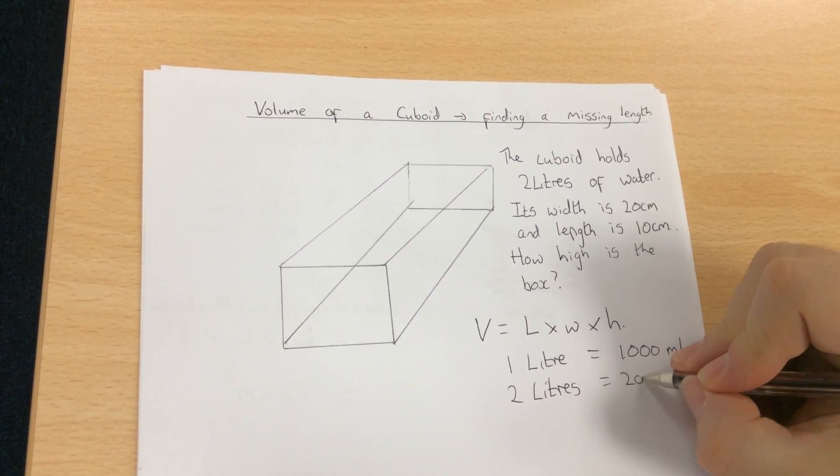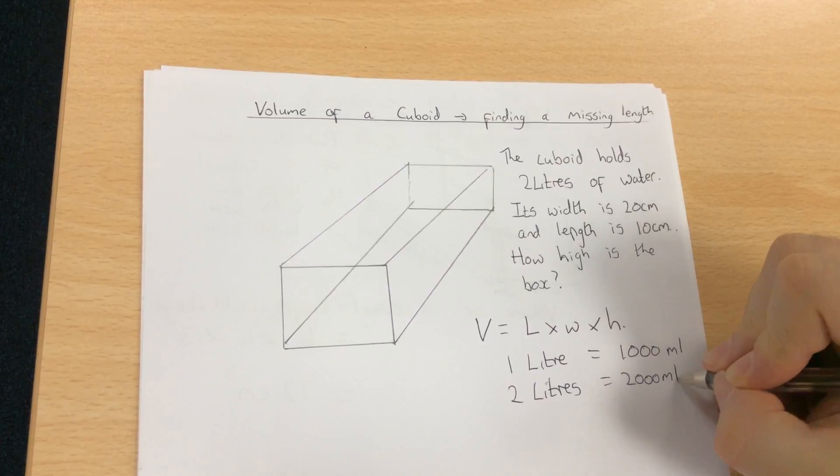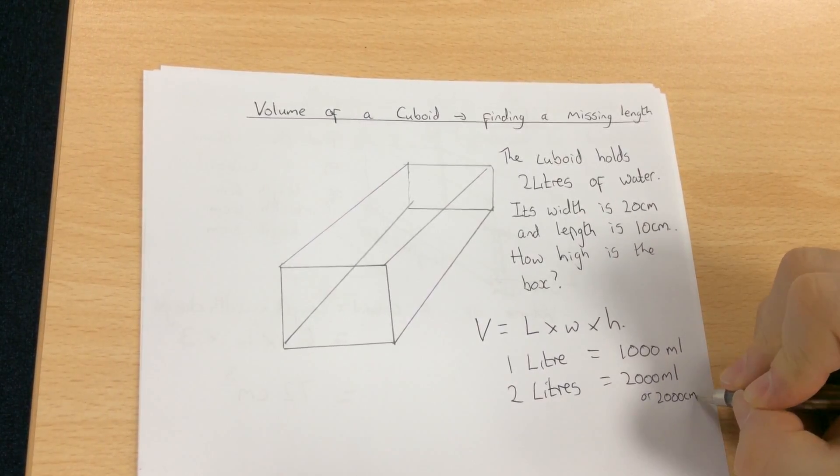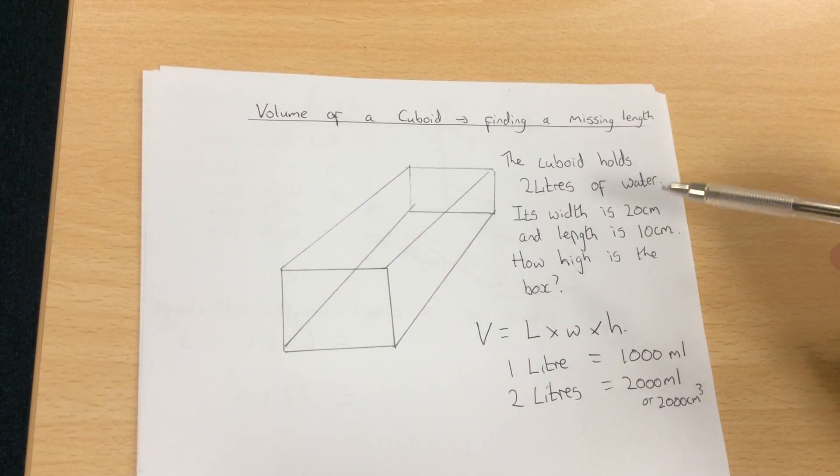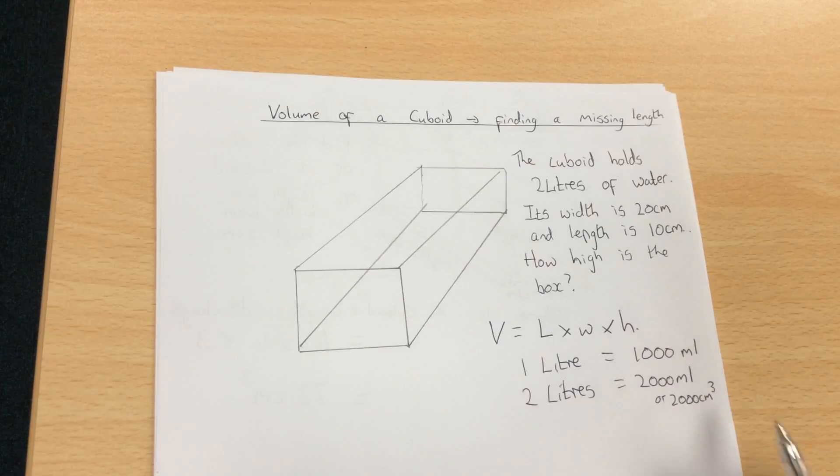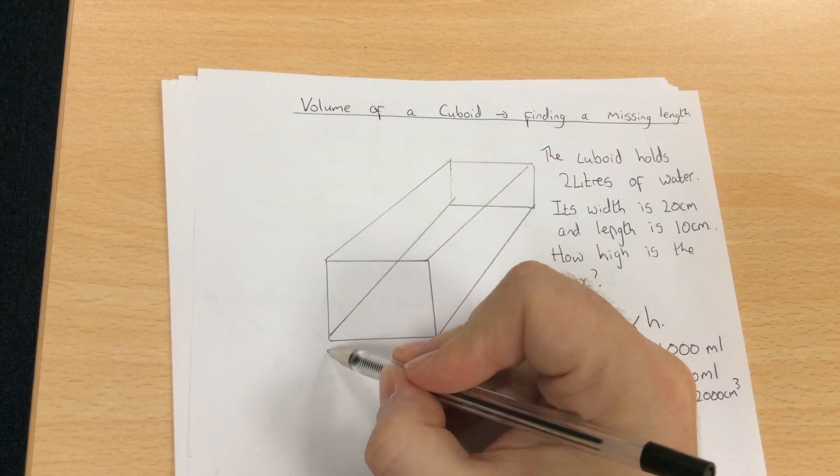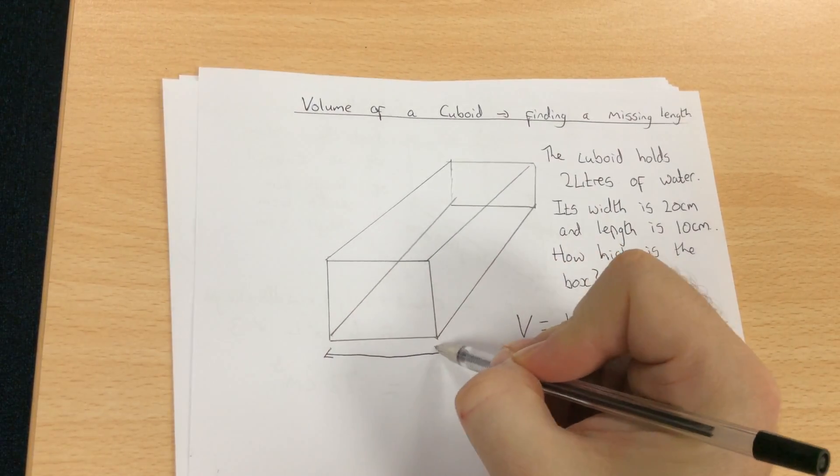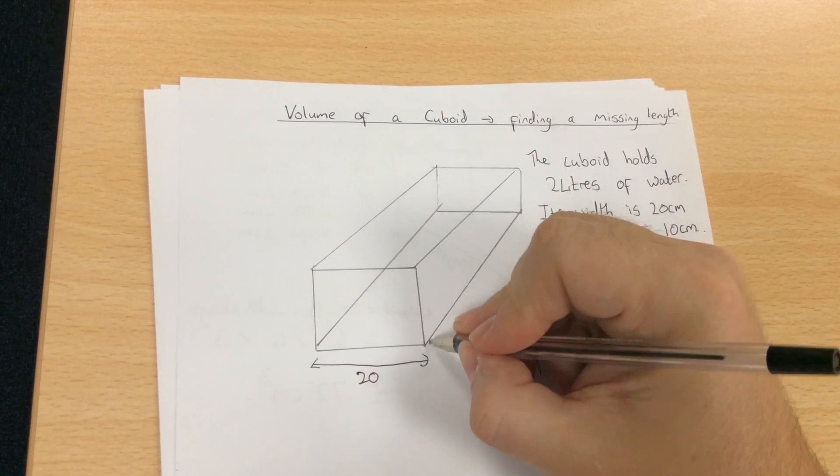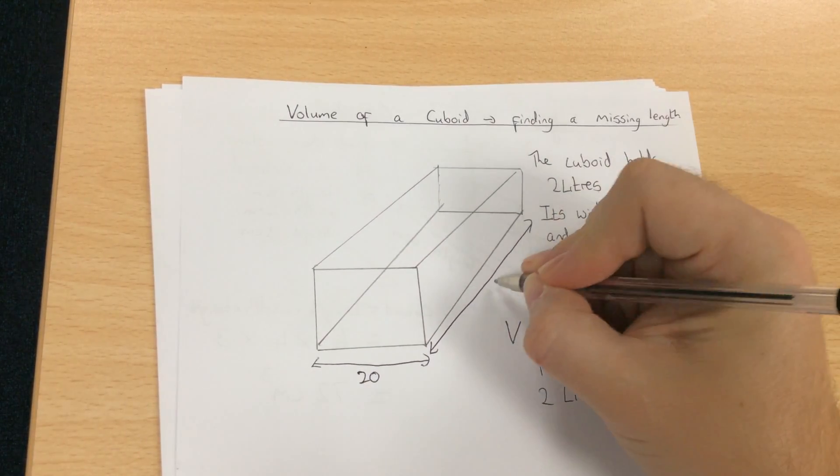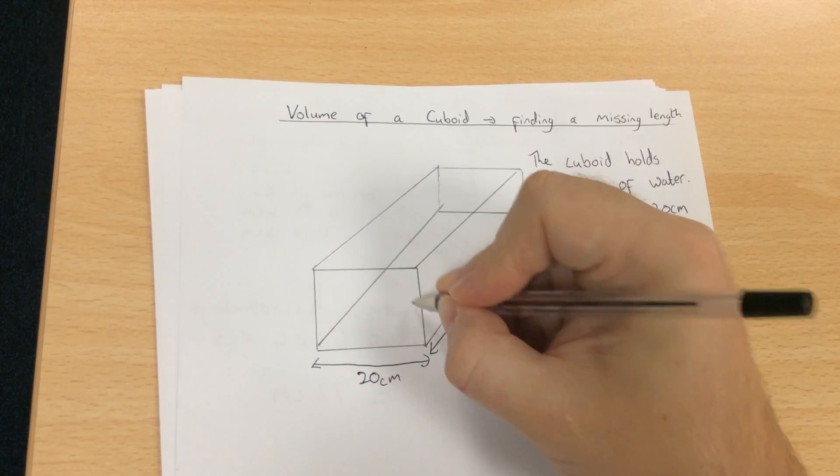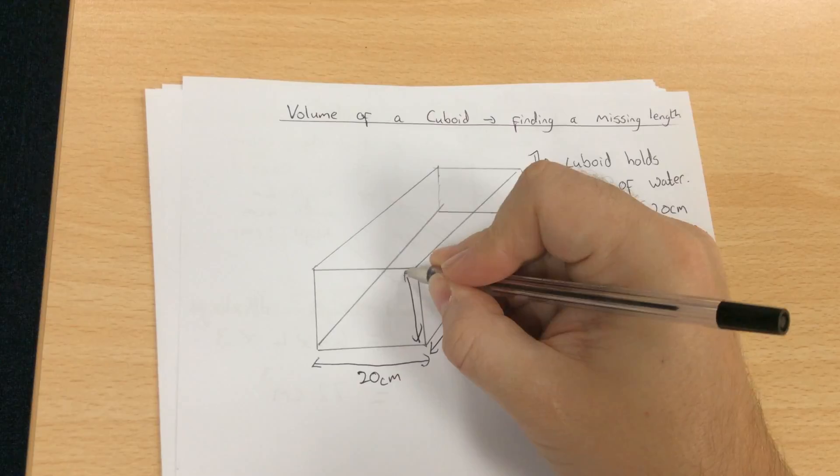Its width is 20 centimeters and its length is 10 centimeters. How high is the box? So the width across here is 20 centimeters, the length is 10 centimeters, and I want to find how high the box is.